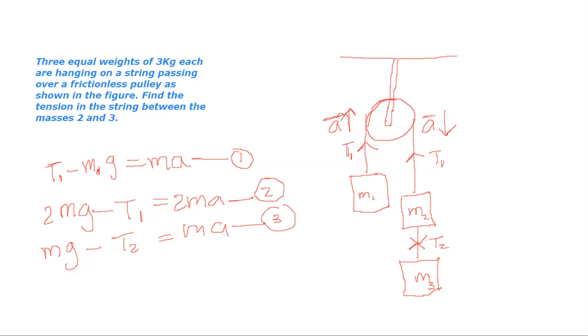Now we can write T2 as T2 equals Mg minus MA. Let us write this equation as equation number 4.